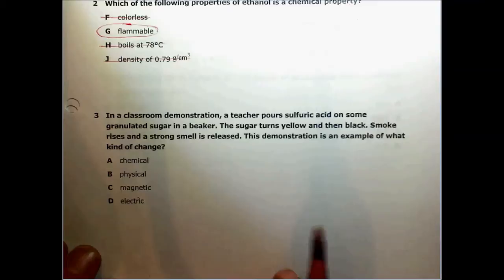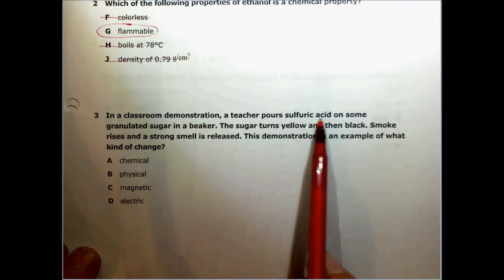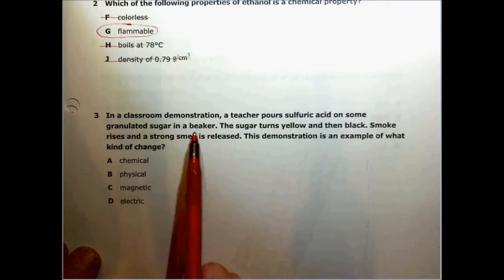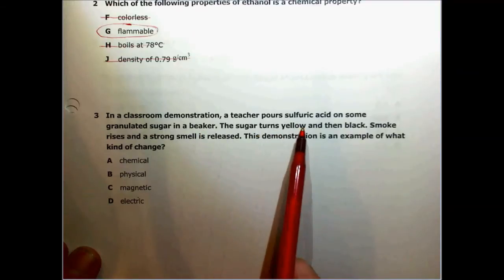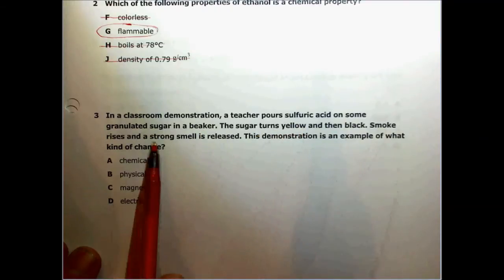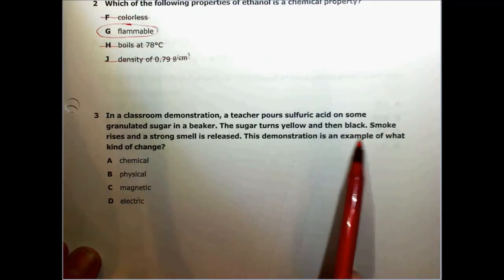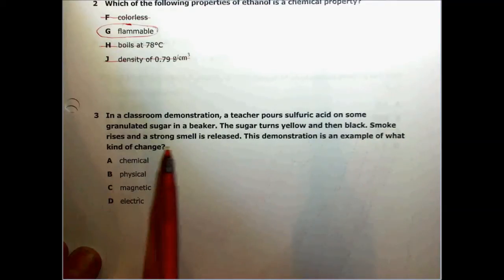Question number three says, in a classroom demonstration, a teacher pours sulfuric acid on some granulated sugar in a beaker. The sugar turns yellow and then black. Smoke rises and a strong smell is released. This demonstration is an example of what type of change.